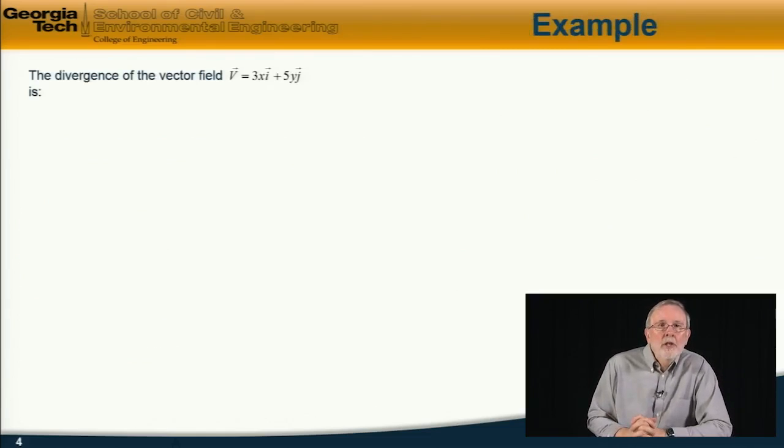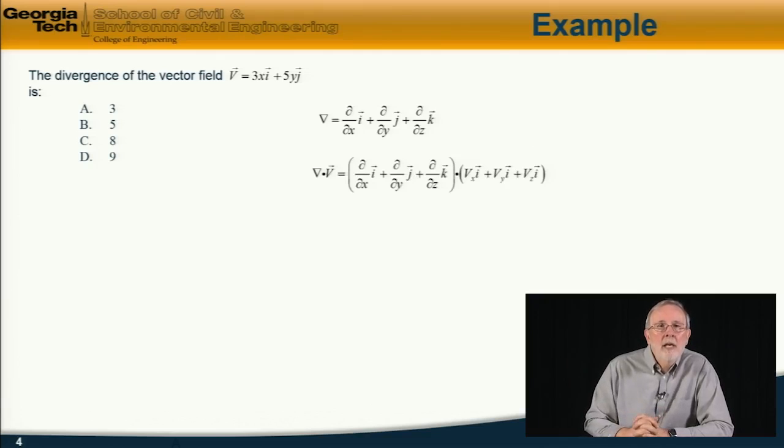Let's do some examples on that. The divergence of the vector field given by v is equal to 3xi plus 5yj is equal to which of these? And of course, this is a scalar quantity. So first we do our basic definitions.